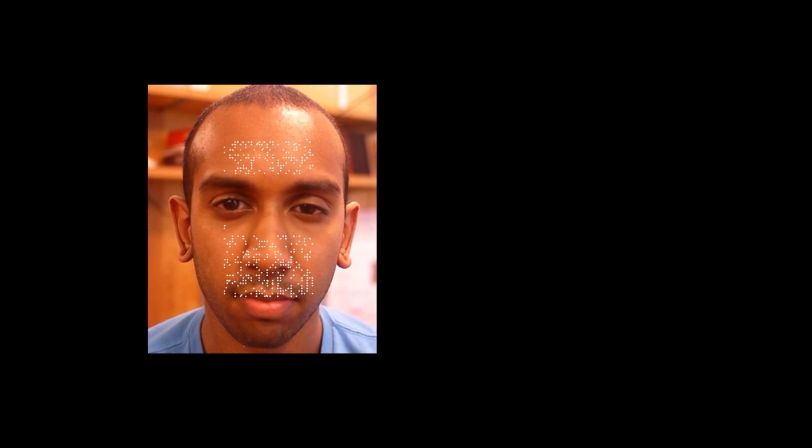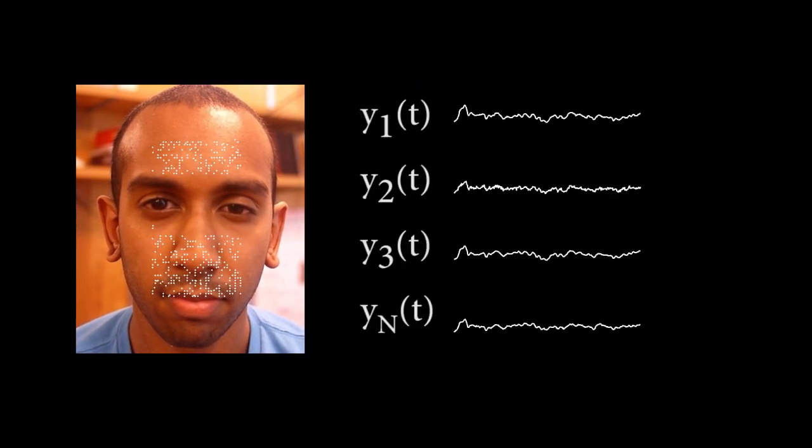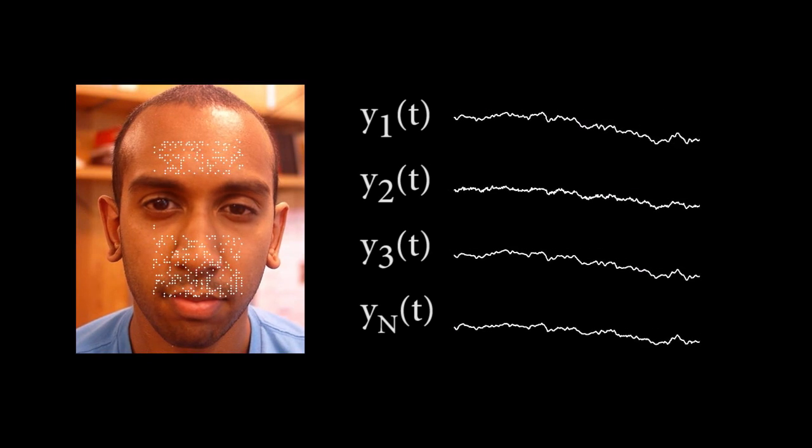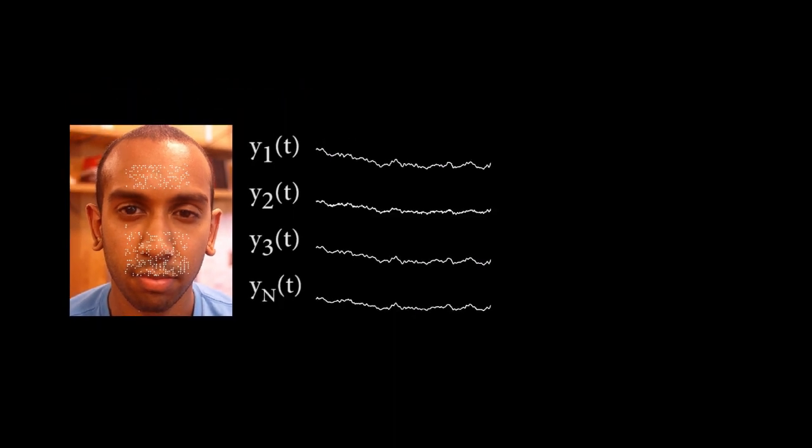We begin by locating the face using a face detector and selecting feature points within the area. The feature points are tracked from frame to frame of the video using the Lucas-Kanade tracking algorithm. We use the vertical, or Y, component of each of the feature point trajectories for our analysis.